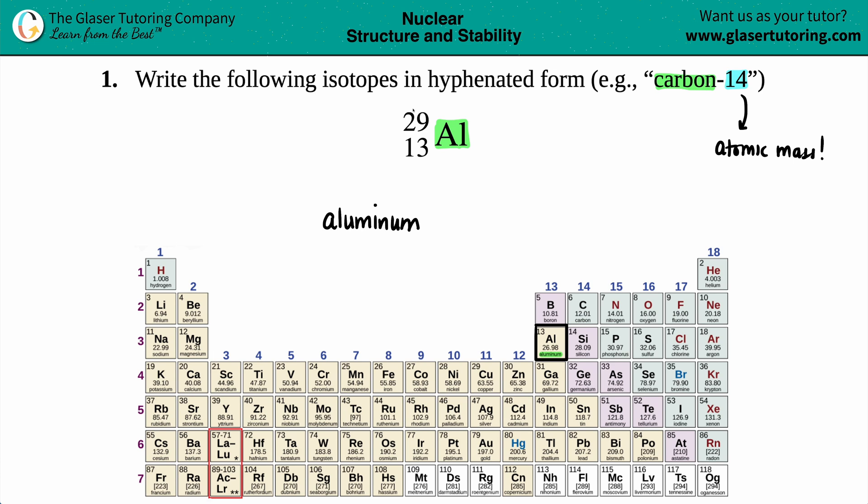So we have to figure out the 29 or the 13 that was given to us - which one is the mass? The mass number is always going to be the higher number on the top. So in this case, 29 is the atomic mass. For anyone asking what the lower number is, that is the atomic number, the number of protons. But in your hyphenated version, since your mass can change, you have to specify it.